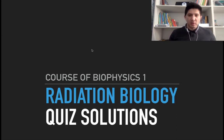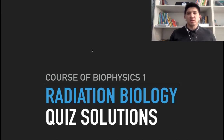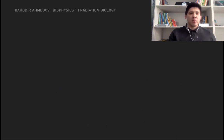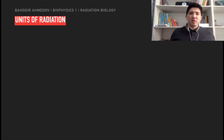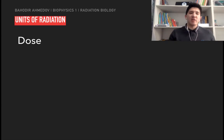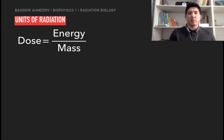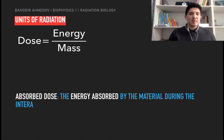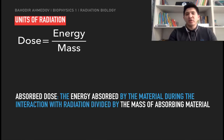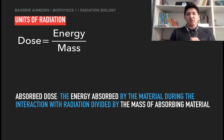Before we do this, we're going to quickly review all the topics which we've learned so far. If you would like to learn about the measurements of radiation in more detail, just go to the lecture video. We first of all are going to denote the units of radiation. We call the radiation which is deposited in the human body or the tissue as a dose, and we're going to measure this as the energy deposited over the mass. This measurement is called the absorbed dose, which is the energy absorbed by the material during the interaction with the radiation, divided by the mass of absorbing material.